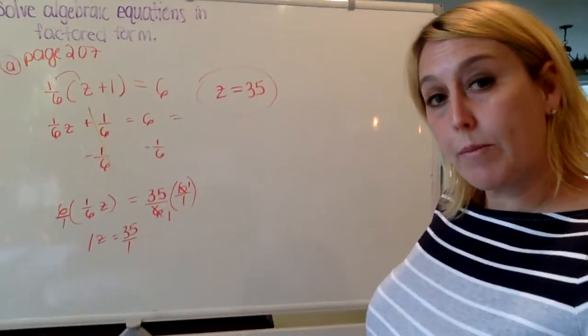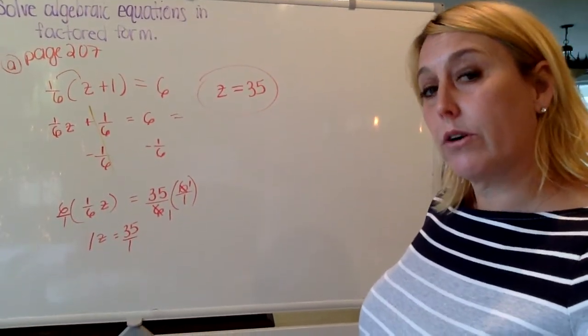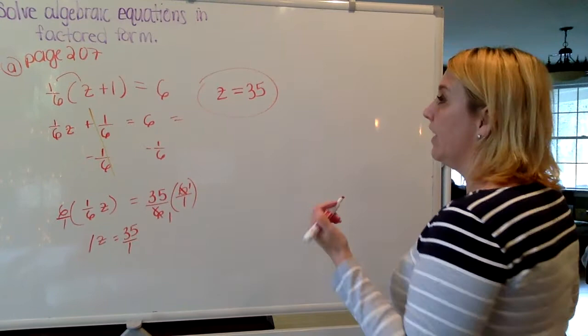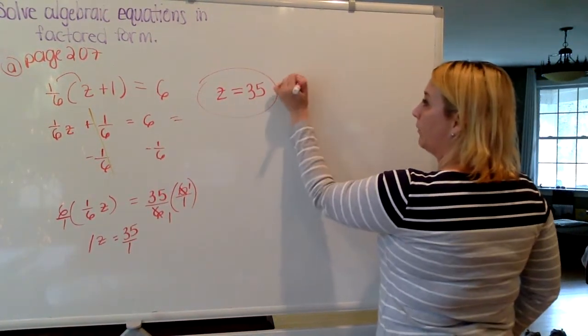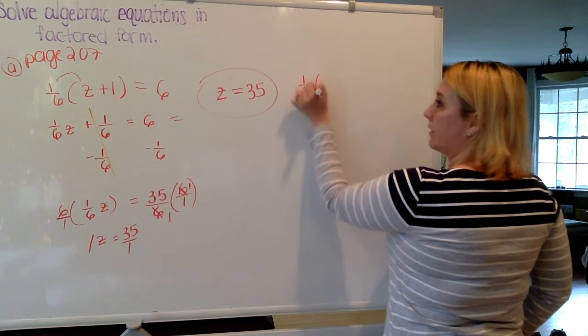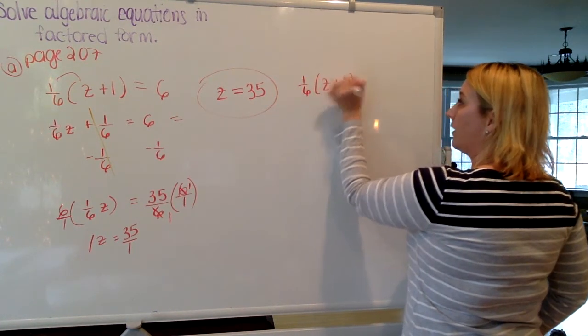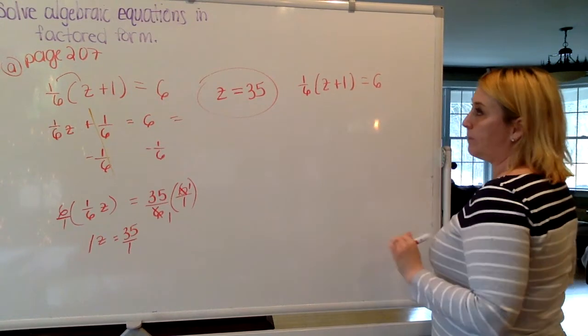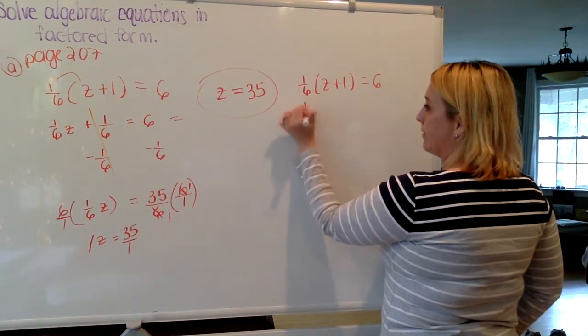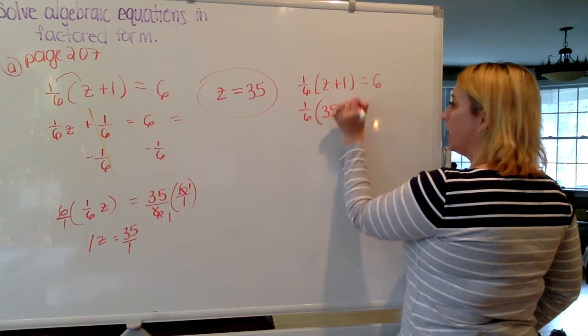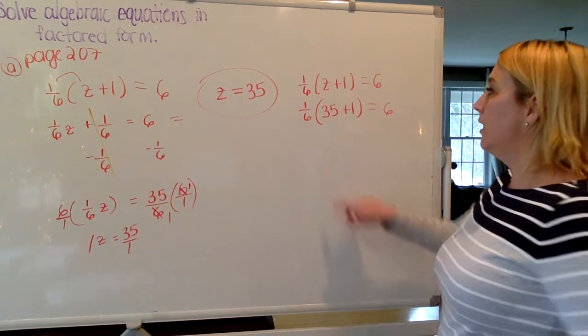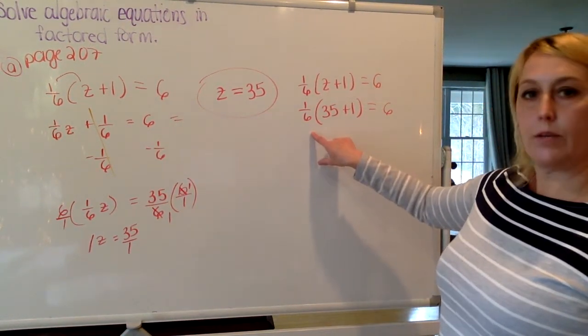Now, with my calculator on my phone, it's harder to substitute with fractions. So in this case, I'm just going to do it out. So what I had was 1/6 times z plus 1 equals 6. So this is the same as saying 1/6 times 35 plus 1 equals 6, right?